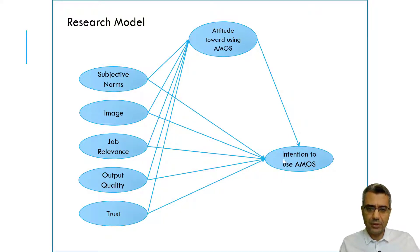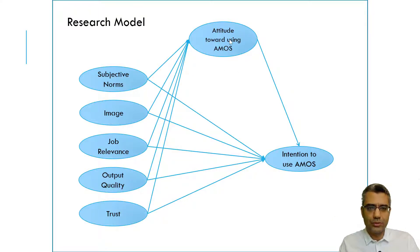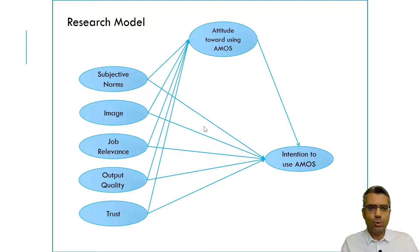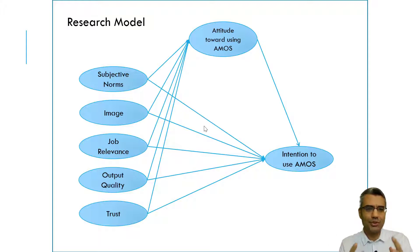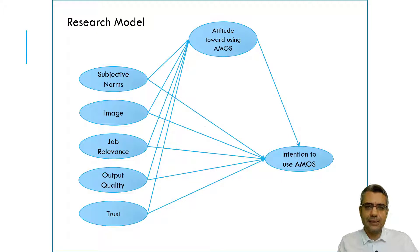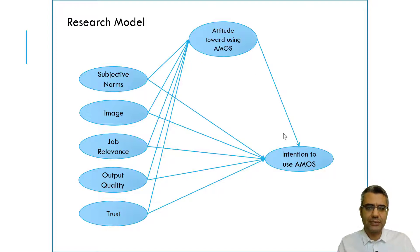The hypothesis for this model covers the relationships between these seven factors — the direct relationship between the five factors with attitude, then attitude with intention, and then maybe these five with intention to use AMOS. At the end we want to test some hypotheses, which is why we do a PhD or research. In this model, the hypotheses we assume are the relationships between these seven factors.